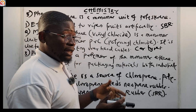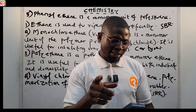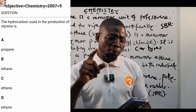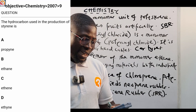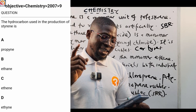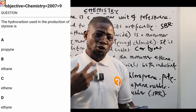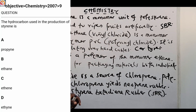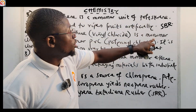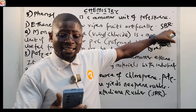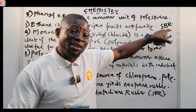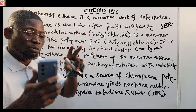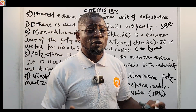Now let us answer the 2007 question number nine from the app: the hydrocarbon used in the production of styrene is — obviously the answer is ethene. Phenylethene is ethene-based; it is a monomer unit of polystyrene, which is called styrene-butadiene rubber. So the hydrocarbon used in the production of styrene is ethene. Please take note of that.